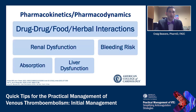You also want to consider pharmacokinetics and pharmacodynamics — looking at drug-drug, food, and herbal interactions. For example, CYP3A4 inhibitors or inducers can impact DOAC agents, and warfarin has well-known food and drug interactions. Adjust dosing based on renal clearance, evaluate bleeding risk including concomitant antiplatelet agents, consider absorption issues such as tube feeds or prior surgery, and assess for liver dysfunction.